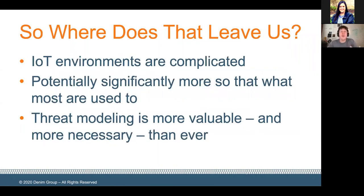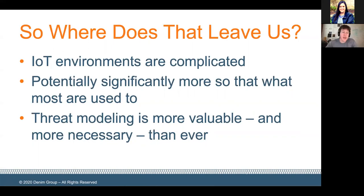So where does that leave us? What we found is IoT environments are complicated — a lot of that stems from the fact that an IoT environment could be consumer, enterprise, or industrial, and we may be taking technologies from one area and trying to shoehorn them into another. These Internet of Things environments are complicated, and potentially significantly more so than what most folks are used to. As a result, threat modeling for specific scenarios is even more valuable and more necessary than ever. For anything other than trivial IoT environments, if you really want to make assertions about the security of those environments, if you want to feel like you have a level of comfort and competency about the security, you have to have a threat model. In the absence of one, there's really not a lot of basis for making any sort of sensible assertion about the security of an IoT system.